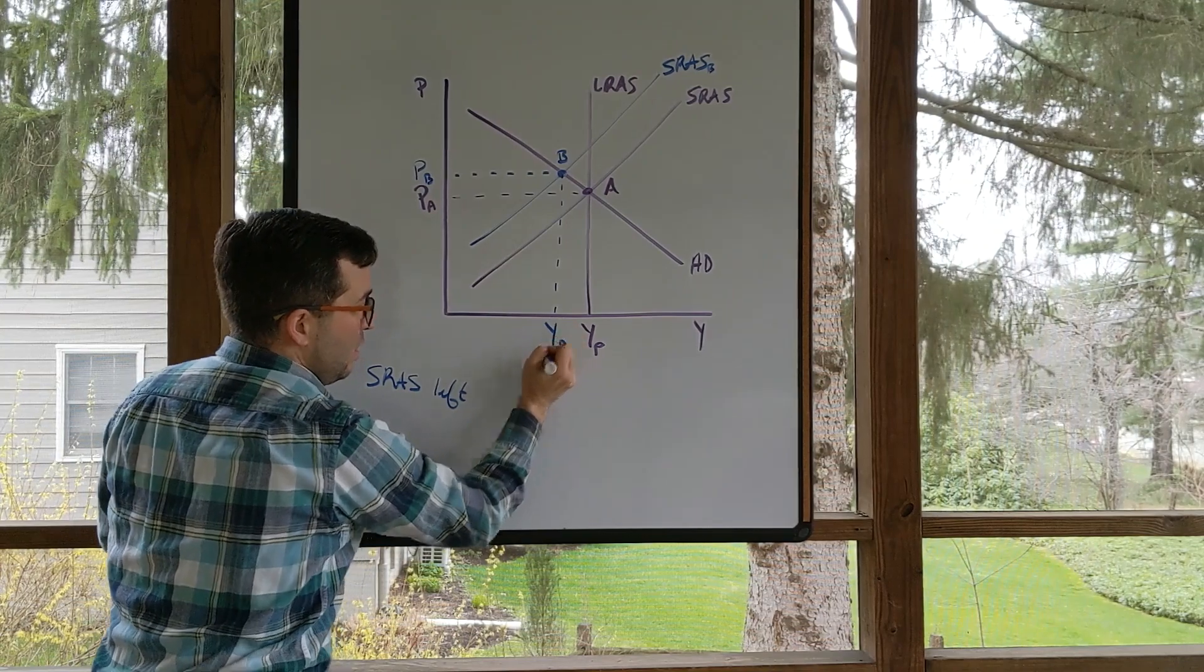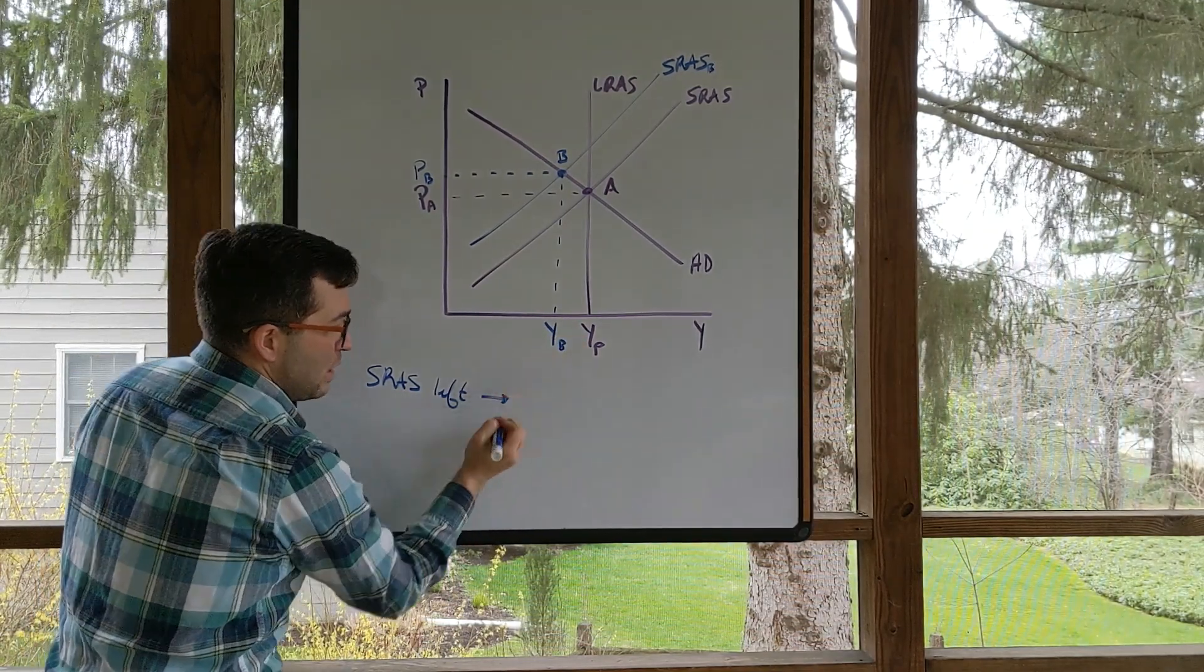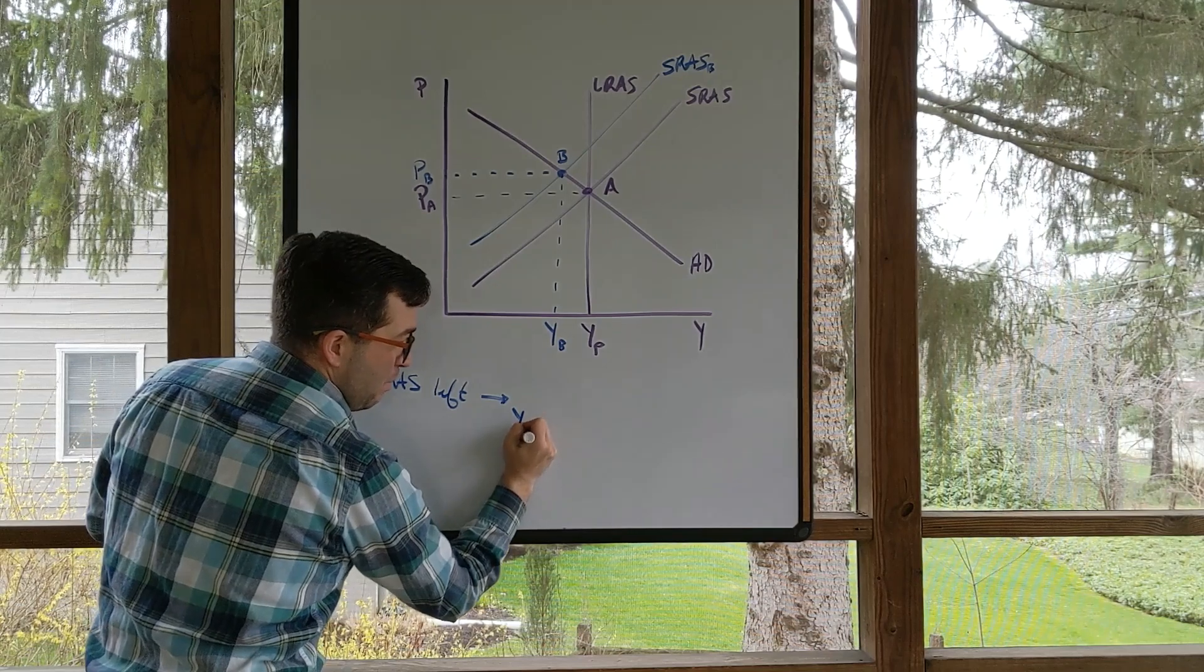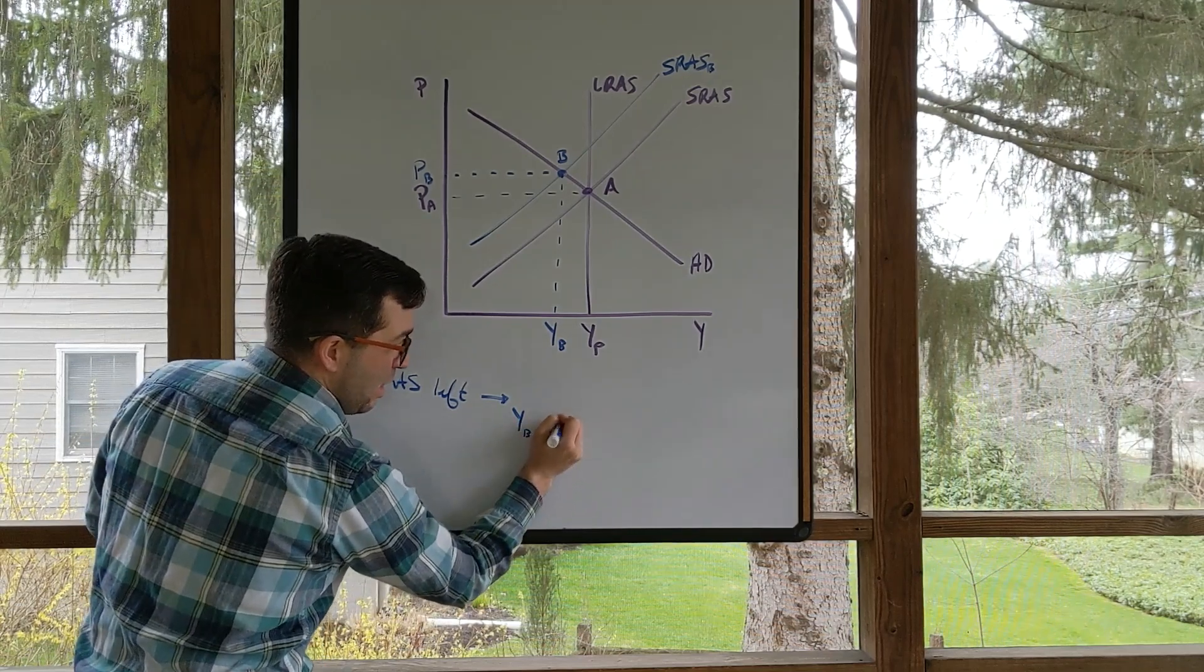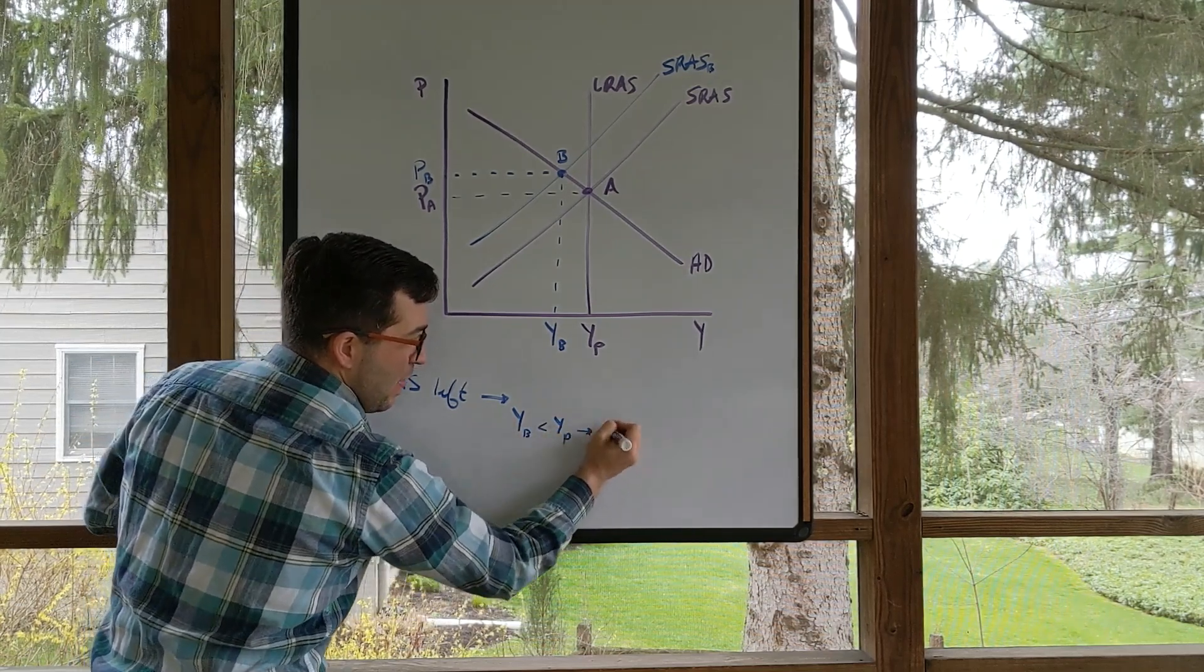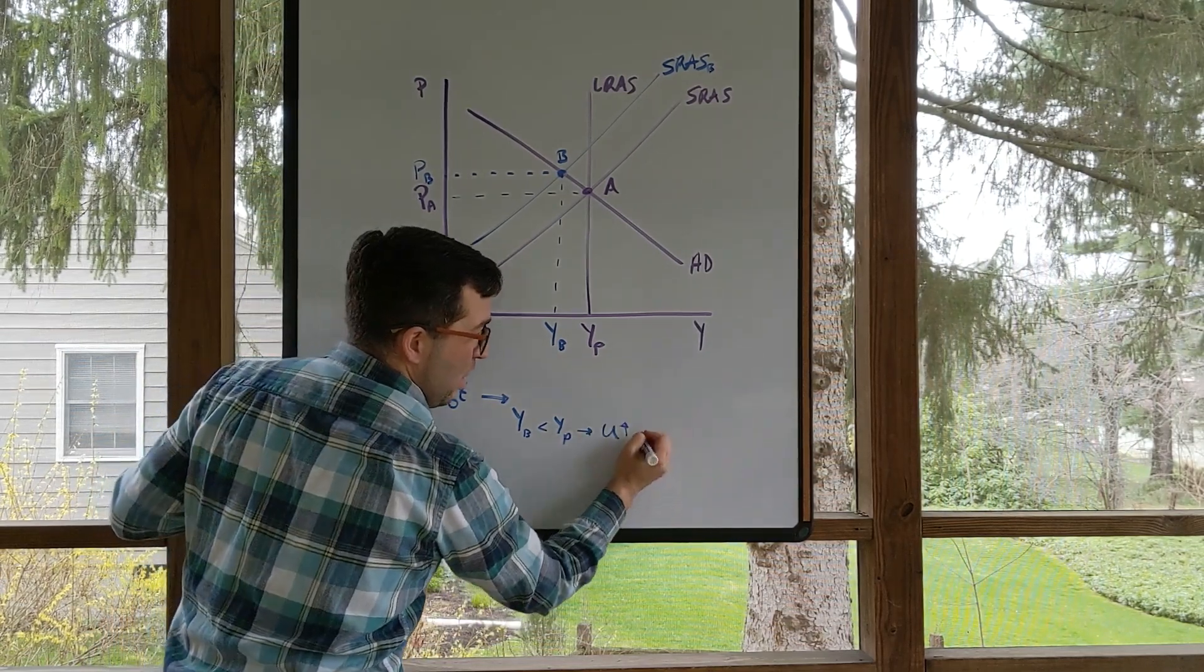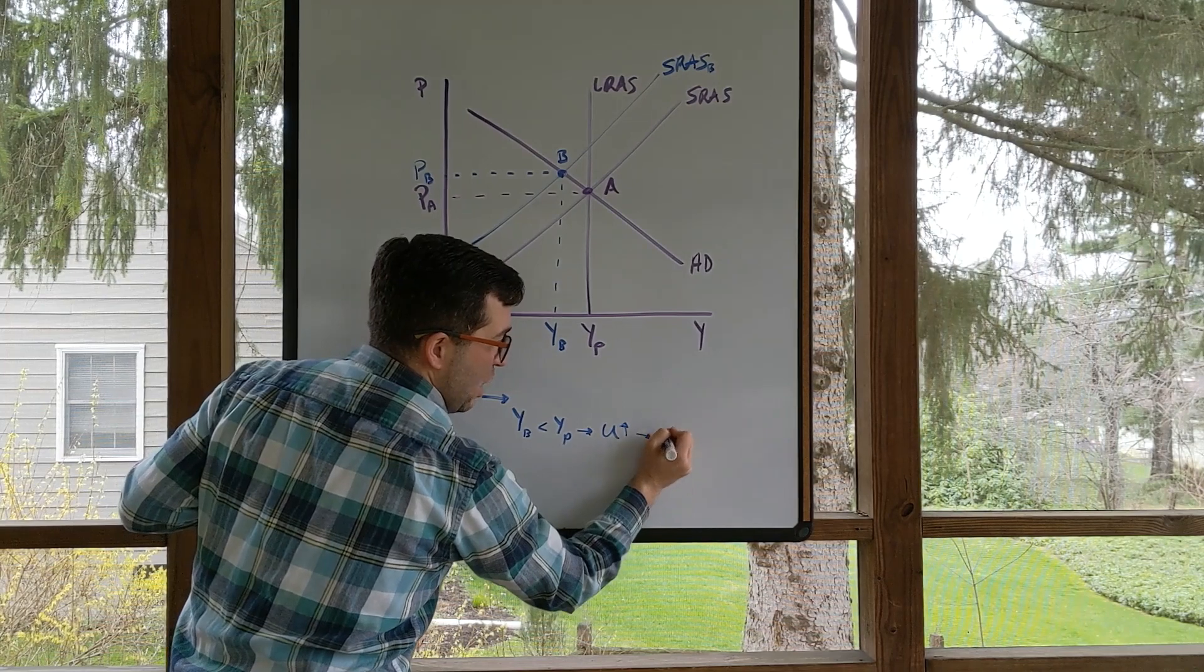Notice the difference here. This is going to put us into a recession. Y sub B is less than Y_P. This means the unemployment rate is going to be higher, and this is going to be a recession.